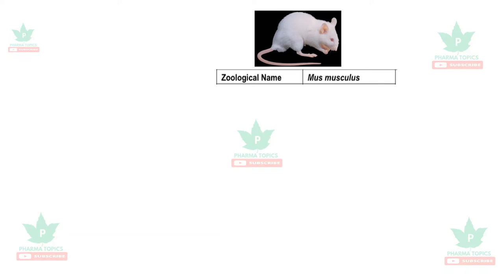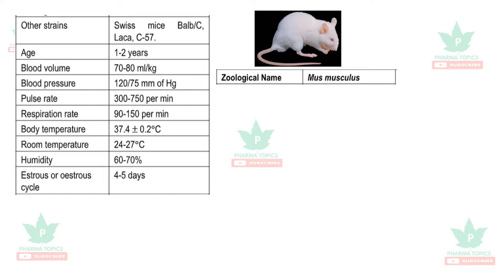The data for Mus musculus can be seen from this slide. The common strains are Swiss albino, BALB/c, AKA, and C57 mice. The lifespan is one to two years, blood volume is 70 to 80 ml per kg, pulse rate is 300 to 750 per minute, and respiration rate is 90 to 150 per minute.